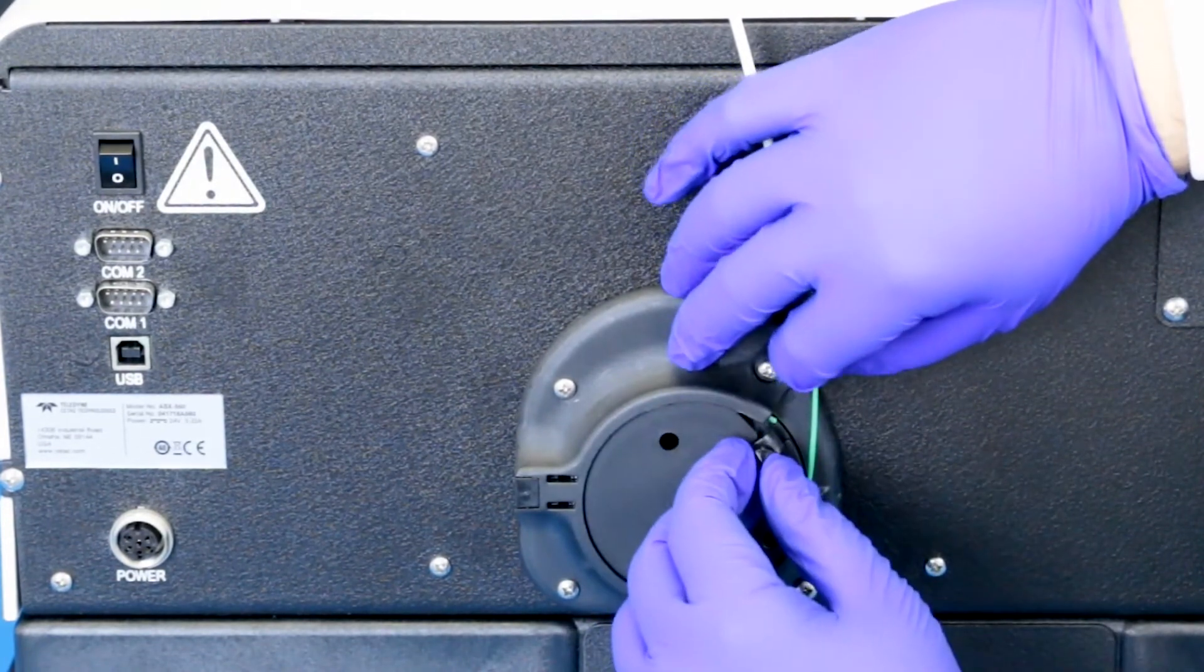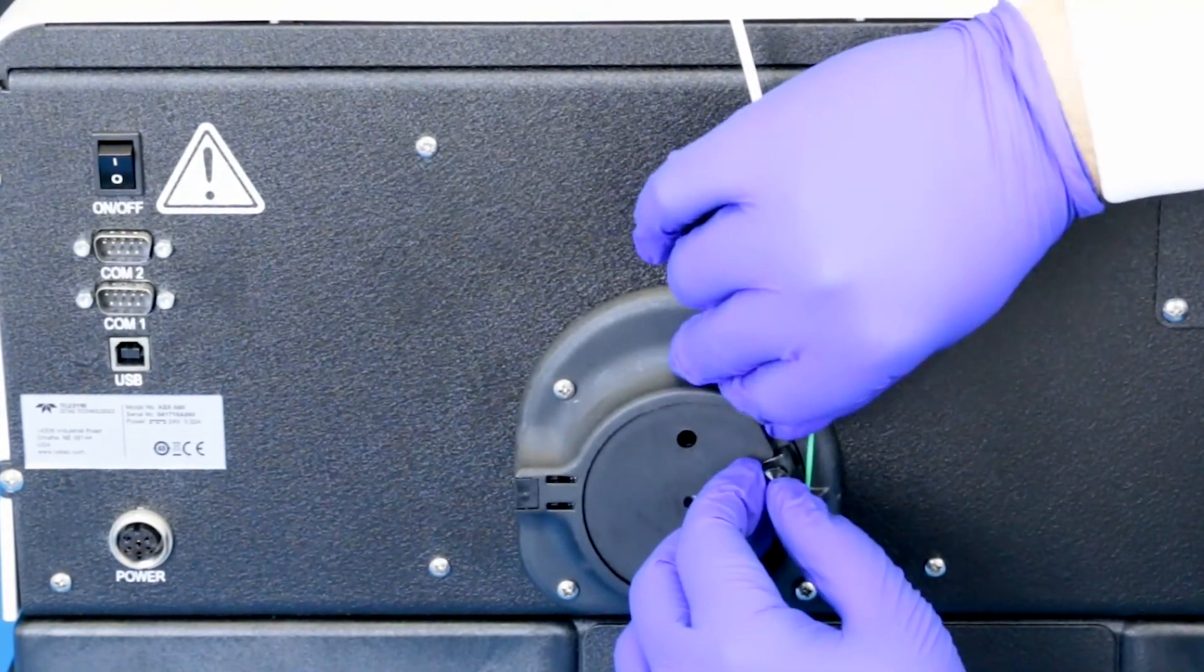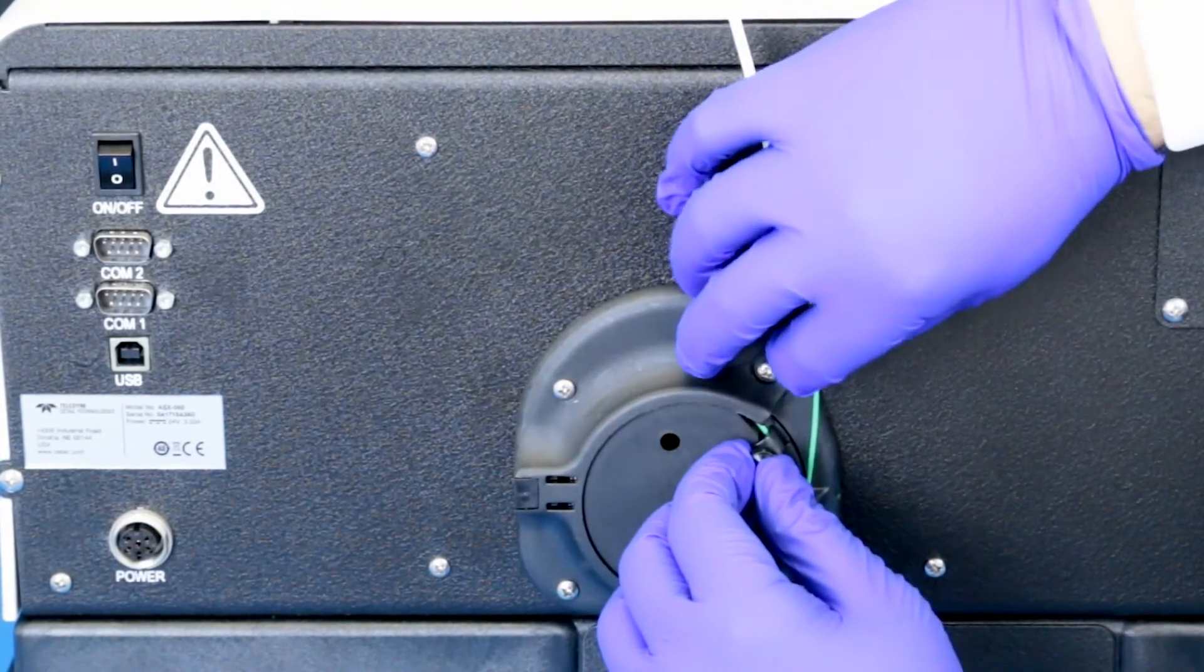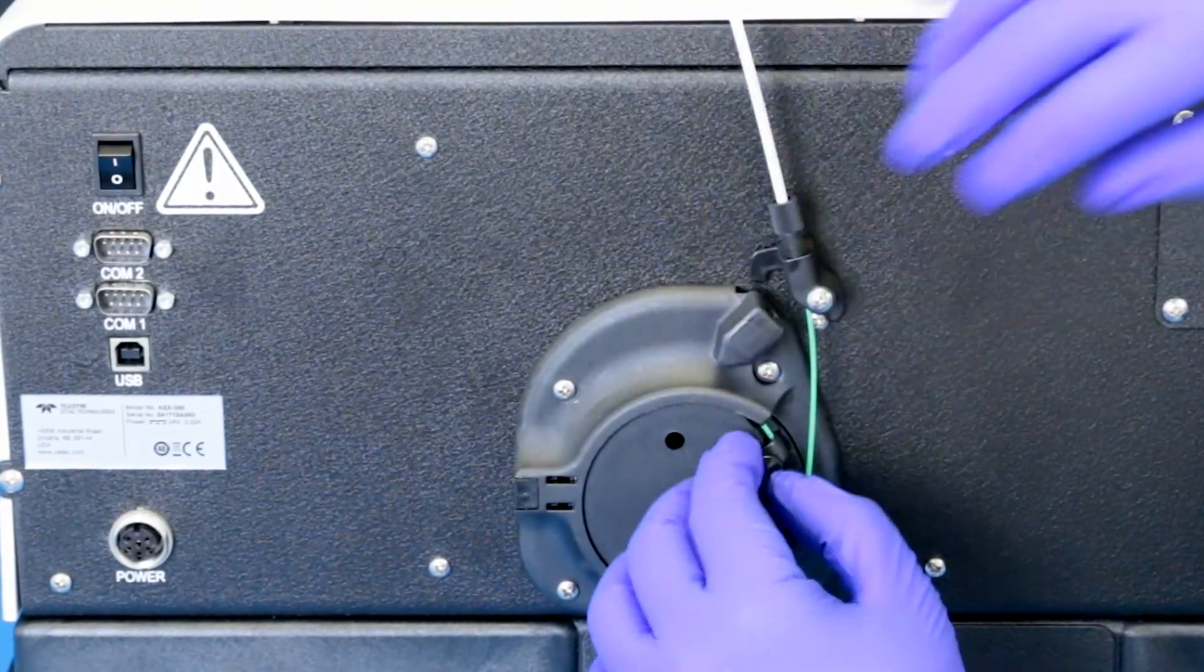Position the cable so about two millimeters of cable extends past the clamp. Hold the cable against the rotor and secure by finger tightening the thumb screw.